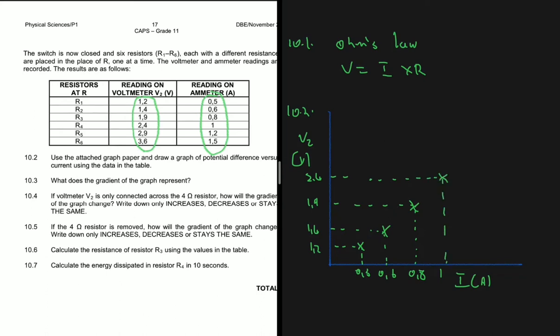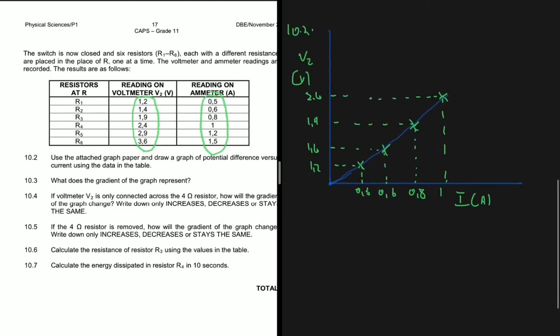So our graph will look something like that. When you draw the graph you have to do it for all the points, but for the sake of time I'll just do it for those four points only.